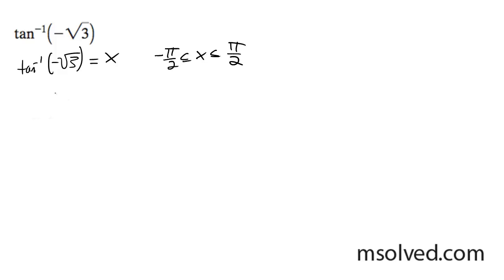And as a result here, I can rewrite this as tangent of x equals negative root 3. And on my unit circle, to get a negative value, it's going to be in quadrant 4, or down here.